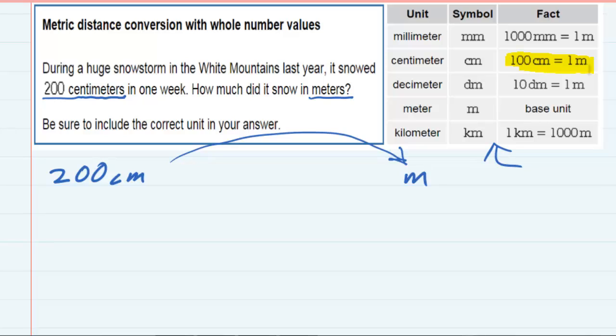What we can do is take that 200 centimeters and multiply by 1 without changing anything. 200 times 1 would still be 200, but the 1 that I'm going to multiply by, I'm going to use the conversion that says 100 centimeters equals 1 meter.